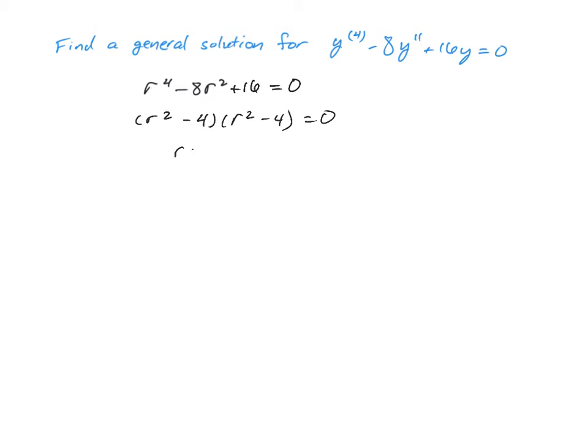And then each one of these factors is (r + 2)(r - 2)(r + 2)(r - 2) = 0.